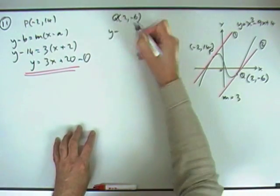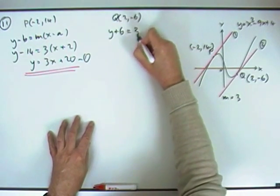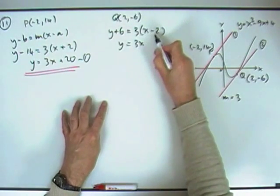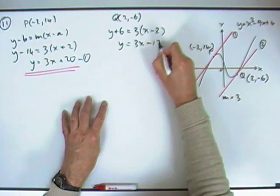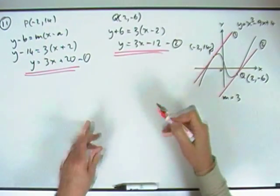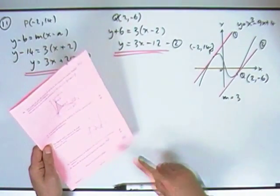Second bit, y minus the y-coordinate, which is negative 6, so y + 6 is 3 times (x - 2), so y is going to be 3x - 6, minus another 6, which is minus 12. Call that equation 2. So it wasn't too bad for the first part, finding the equations of two tangents. That was an easy 6.